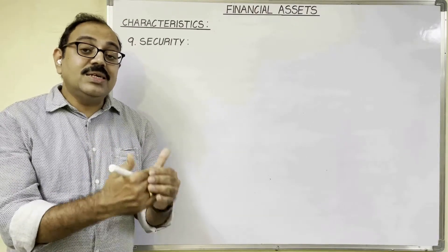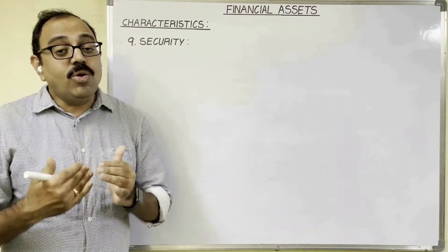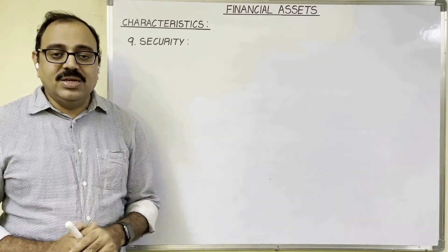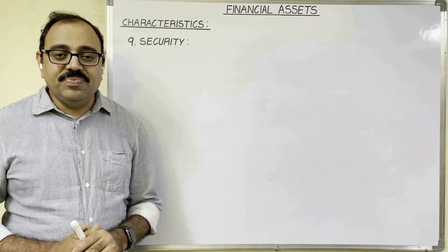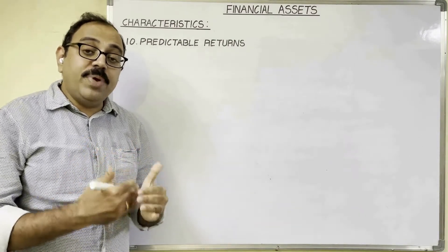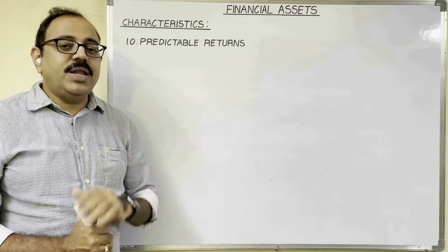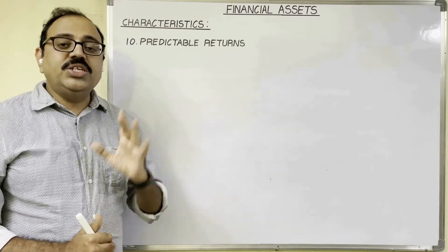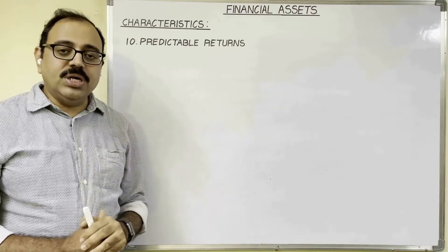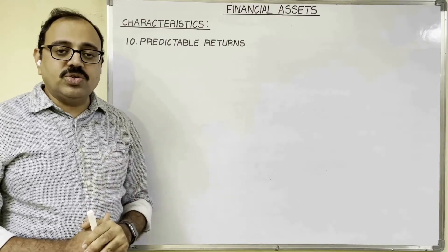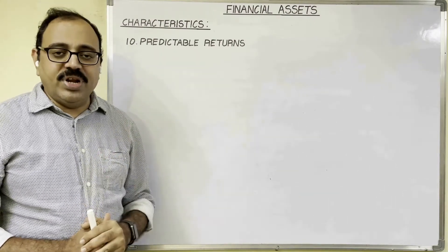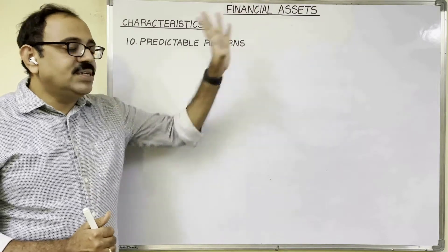The ninth feature is security. By pledging financial assets as security, an investor can avail a loan facility. Thus, financial assets can be used as security against loans. The tenth feature is predictable returns. In case of financial assets such as bank deposits, debentures, and preference shares, the investor can know in advance how much interest or dividend they will earn. Even in the case of equity shares, to some extent the investor can predict the dividends.